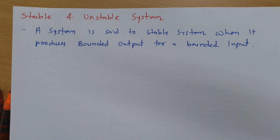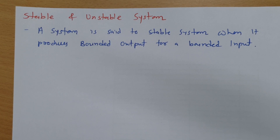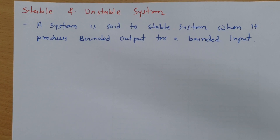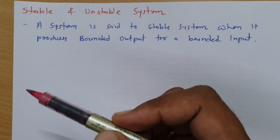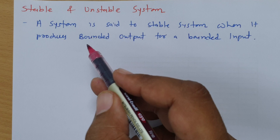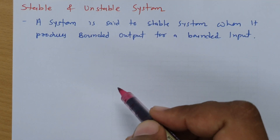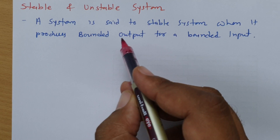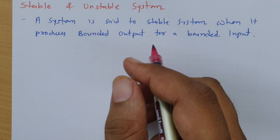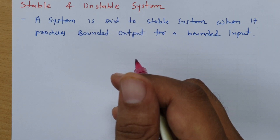Welcome to the signal and system lecture series. In this session I will explain stable and unstable systems. A system is said to be stable if it produces a bounded output to a bounded input. If it follows this condition — bounded output with respect to bounded input — then one can say the given system is stable.